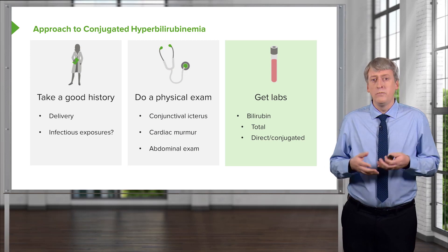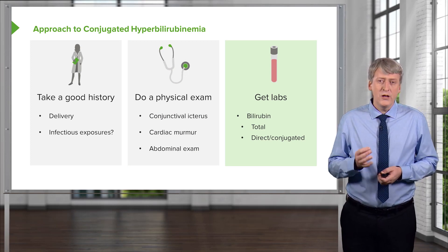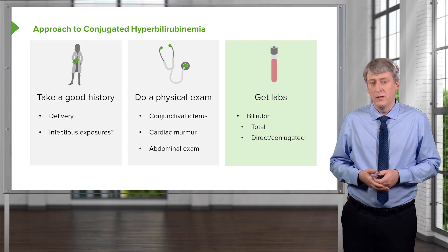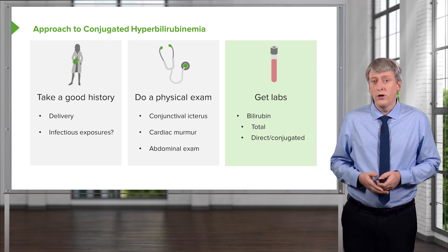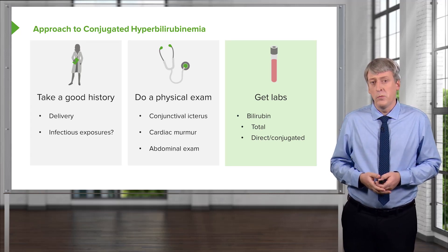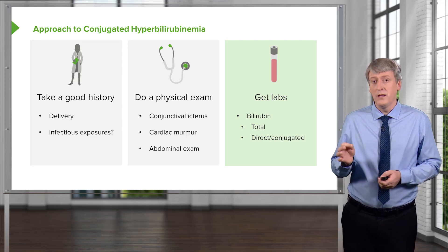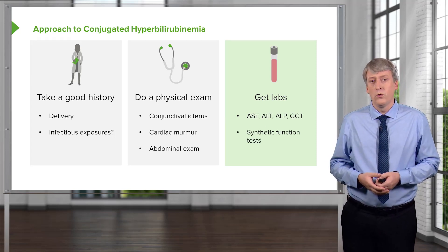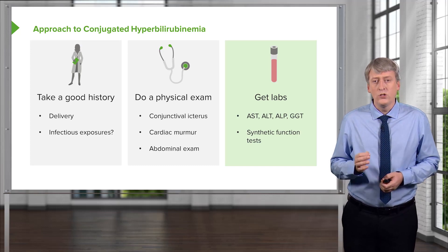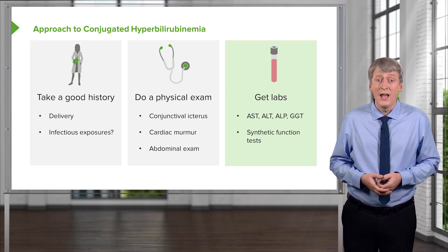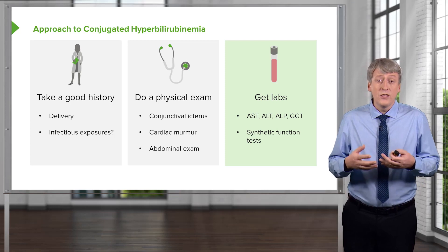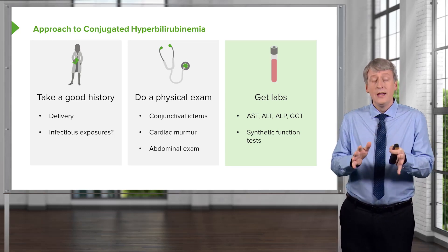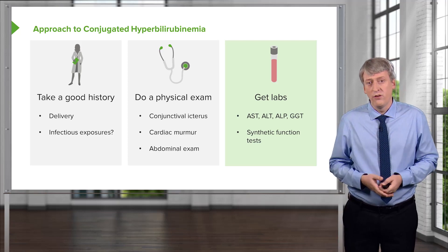Labs are the mainstay, so obtaining a bilirubin is important. Especially in babies, you can't just get a total bilirubin — you need to break it down into direct and indirect bilirubinemia. While most children are indirect, children with conjugated hyperbilirubinemia must not be missed and should not be treated with lights, as they will develop bronze baby syndrome. Checking liver function tests is important, and don't forget the GGT, which is useful for assessing the biliary tree because many of these children have abnormalities of the biliary tree. Synthetic function tests like PT, PTT, and INR are important for understanding whether the liver is working — it's not enough to just know it's inflamed; we also want to know whether it's functioning correctly.